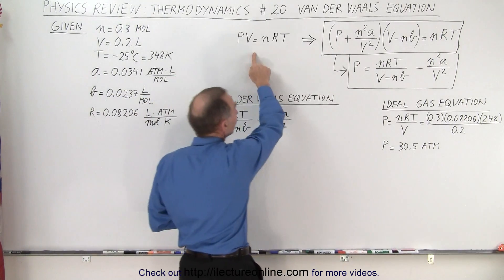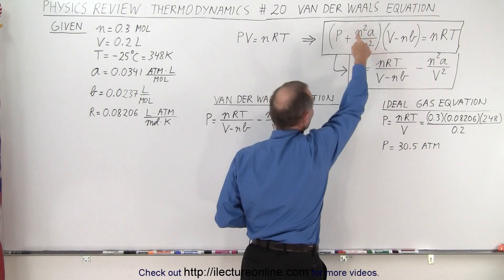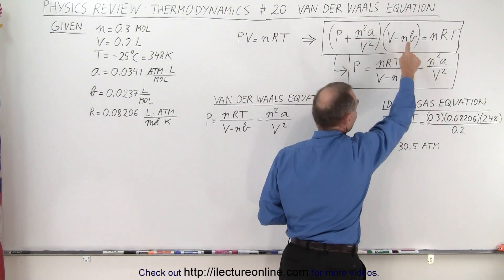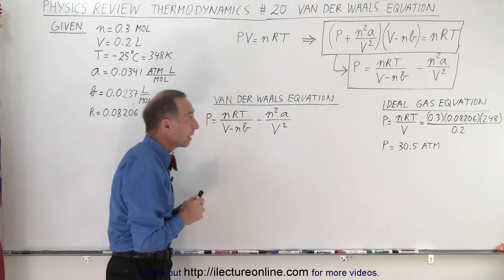And then the ideal gas equation turns into something like this. There's an adjustment factor for the pressure due to the electrical forces, and there's an adjustment factor for the volume because the molecules take up some space.